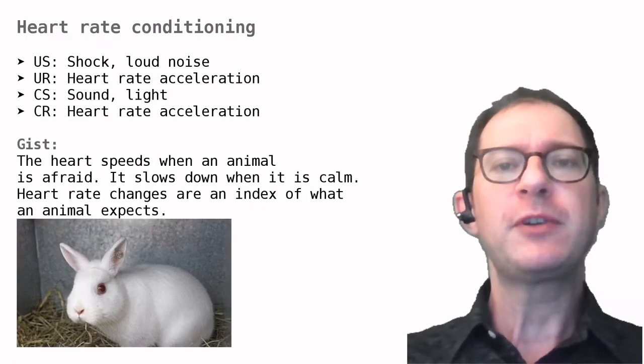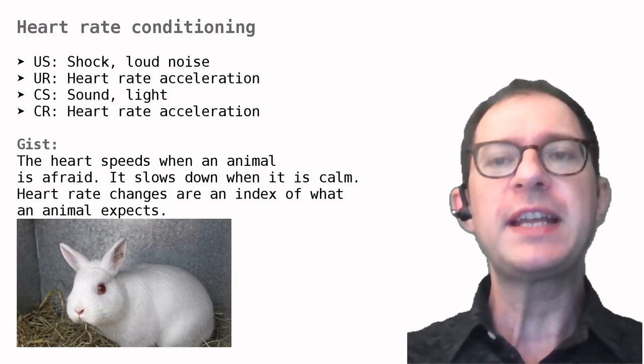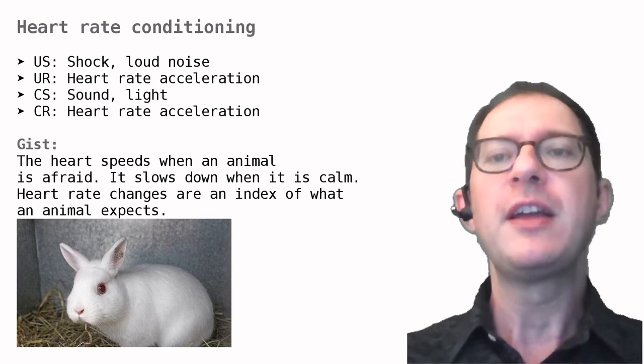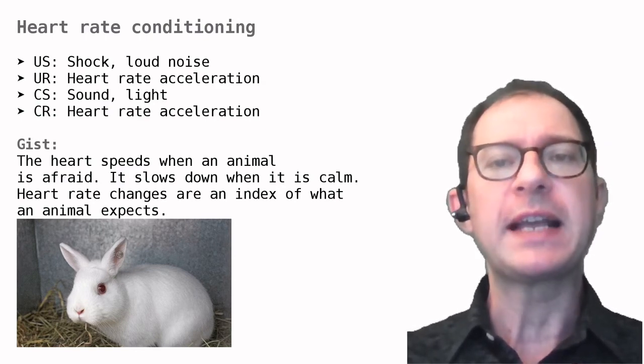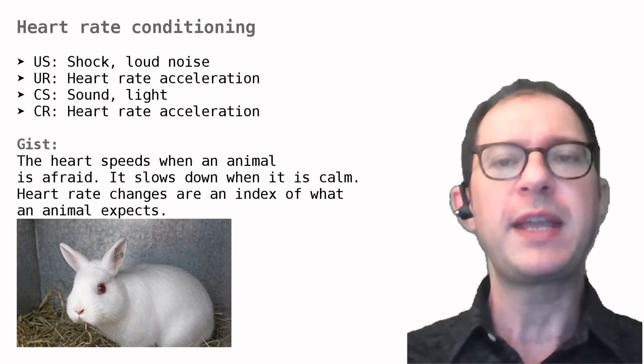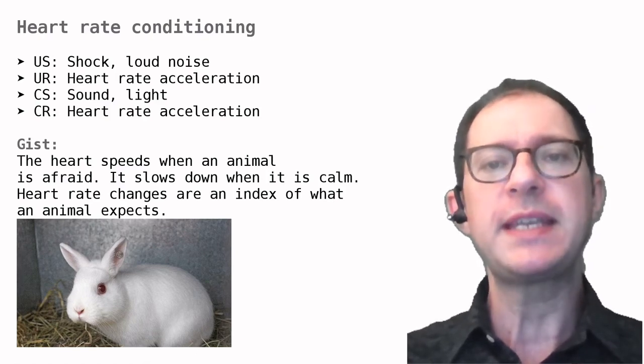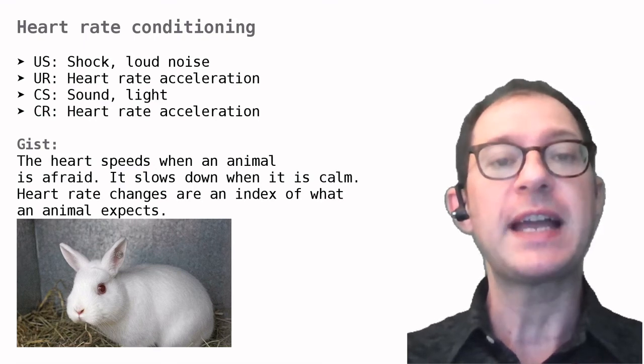The last Pavlovian preparation I will cover is heart rate conditioning. The idea is that the heart naturally speeds up when an animal is anxious or agitated. Also, the heart beats more slowly when the animal is relaxed. Heart rate can be modified through conditioning similarly to the other behaviors that we have seen so far. For example, if we use the sound CS and the shock US, the animal's heart rate will increase when it hears the sound.